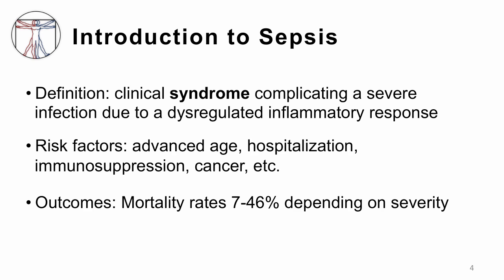Sepsis is a clinical syndrome which complicates many different types of infections — it's not due to one specific infection. What happens is the body's normal immune response becomes dysregulated and causes an excessive amount of inflammation. Risk factors include advanced age, hospitalization, and having an abnormal immune system from immunosuppression or cancer treatment. Mortality rates are quite high: lower with SIRS or sepsis at around 7%, but once you go into septic shock, almost half of people will die.